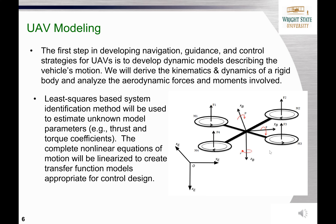We will derive the kinematics and dynamics of a rigid body and analyze aerodynamic forces and moments involved. By integrating these components, we will obtain a dynamic model describing the vehicle's motion. A least-squares-based system identification method will be used to estimate key model parameters, such as thrust coefficient and torque coefficient. Then, we will have a complete non-linear state-based model describing the vehicle's dynamics. This model will be linearized to obtain transfer function models appropriate for classical control design.